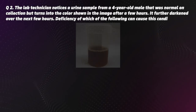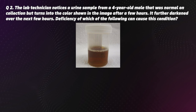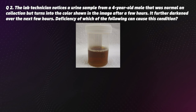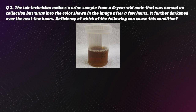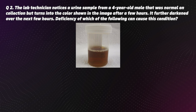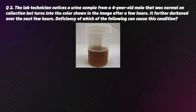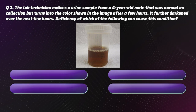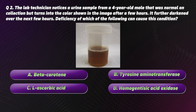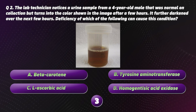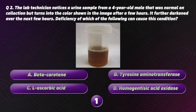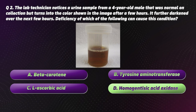Question 2. A lab technician notices a urine sample from a 4-year-old male that was normal on collection, but turns into the color shown in the image after a few hours, and further darkened over the next few hours. Deficiency of which of the following can cause this condition? Options: A. Beta-carotene, B. Tyrosine aminotransferase, C. L-ascorbic acid, D. Homogentisic acid oxidase. The correct option is D, Homogentisic acid oxidase.